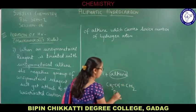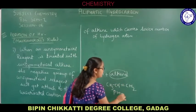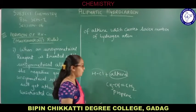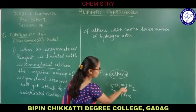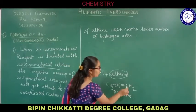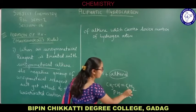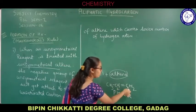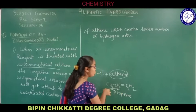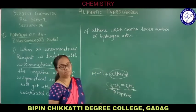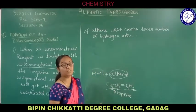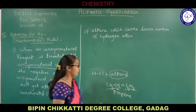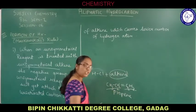Propene is considered to be unsymmetrical. Why? Because across the carbon-carbon double bond — which is present between carbon number one and carbon number two — the number of carbon atoms on each side is not the same. The groups are different from each other, so it is considered to be an unsymmetrical alkene.